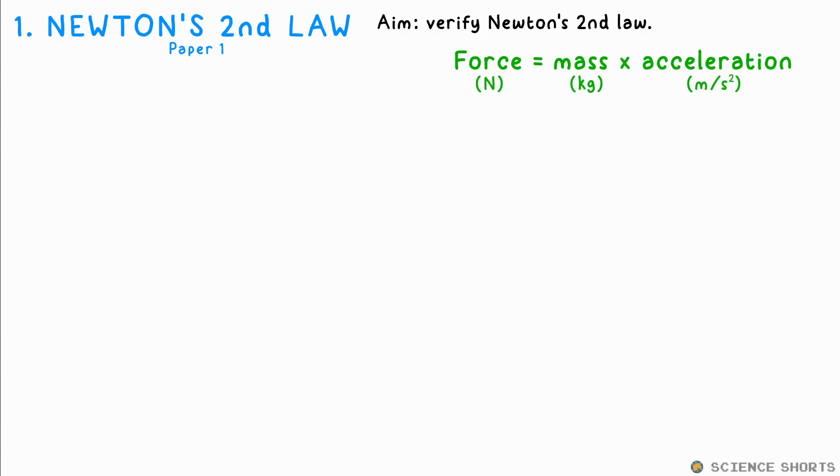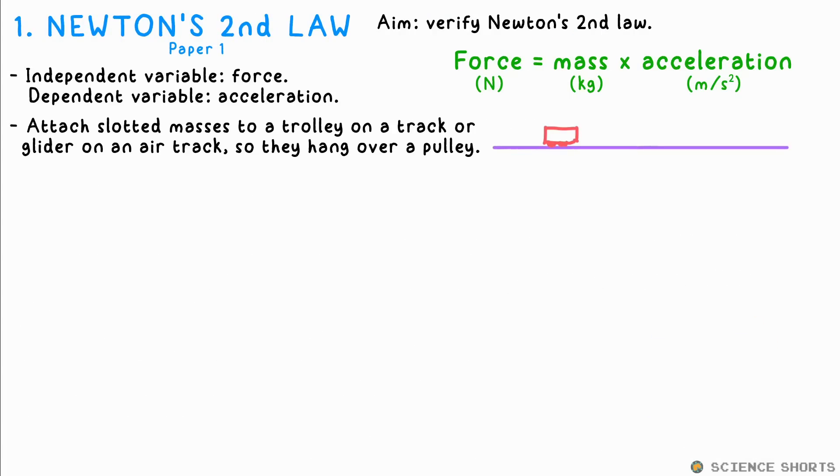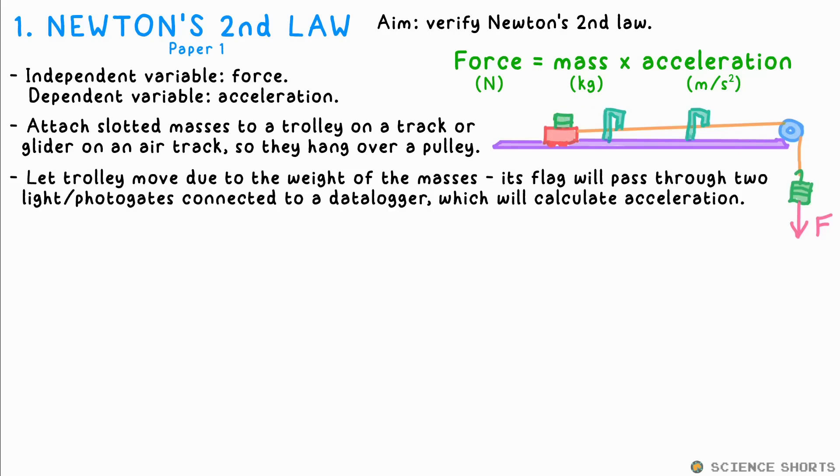Physics one, Newton's second law, F equals MA, force equals mass times acceleration. We do this by attaching slotted masses to a trolley on a track or the slider on an air track with the string going over a pulley. We let the masses fall, which accelerates the trolley. A flag on the trolley will pass through two light gates or photo gates and the computer or data logger will calculate the acceleration.